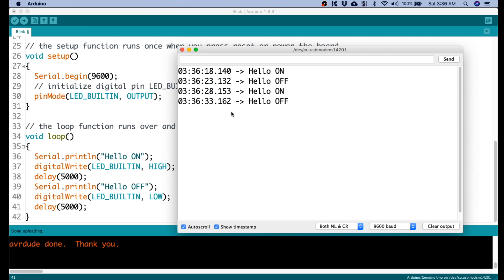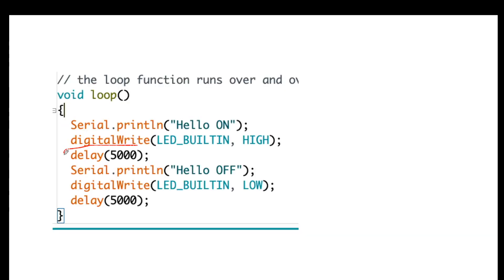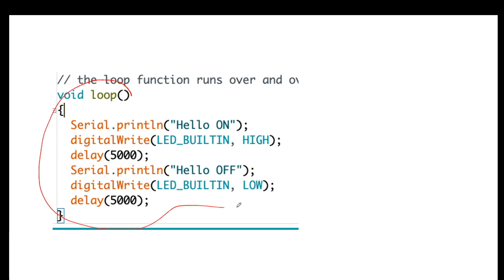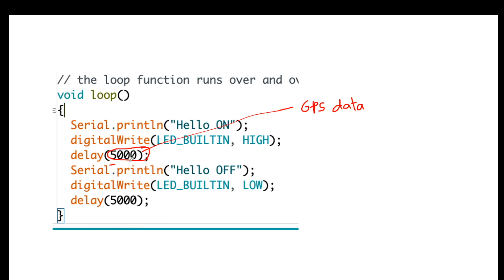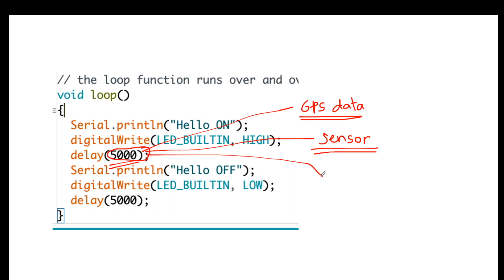So what is wrong with this delay? If you're doing delay, you're actually doing nothing during that time. In a basic blinking example this works, but in more complicated projects it is not advisable. During those five seconds of doing nothing, you could do meaningful tasks — like getting GPS data, getting data from sensors, or transmitting data over the internet for IoT applications.